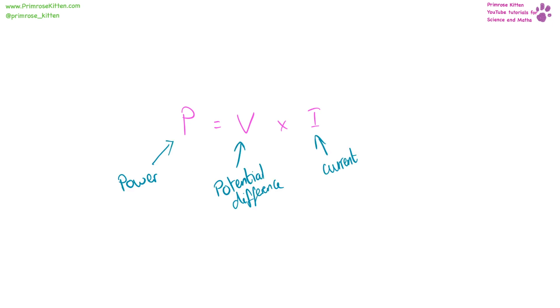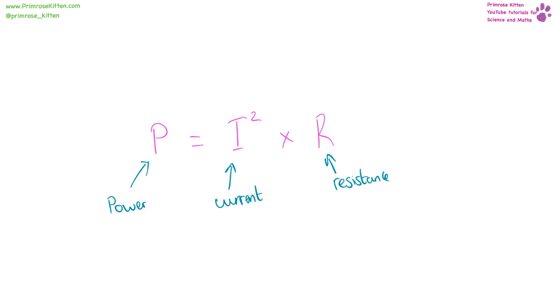Power is equal to potential difference times current. Power is measured in watts, that is a capital W, potential difference is measured in V, and current is measured in amps. Power equals current squared times resistance. Power is measured in watts, current is measured in amps, and resistance is measured in ohms.